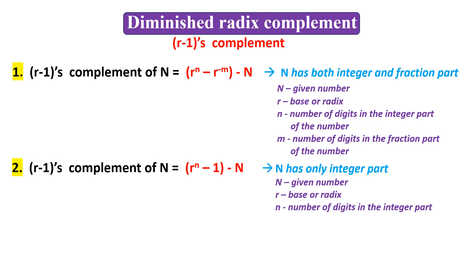The next formula is used if the number has only the integer part — there is no fraction part. This formula is derived from the first formula. Since there is no fraction part, the number of digits in the fraction part becomes 0, giving r to the power of 0, which equals 1. So the formula simplifies accordingly.